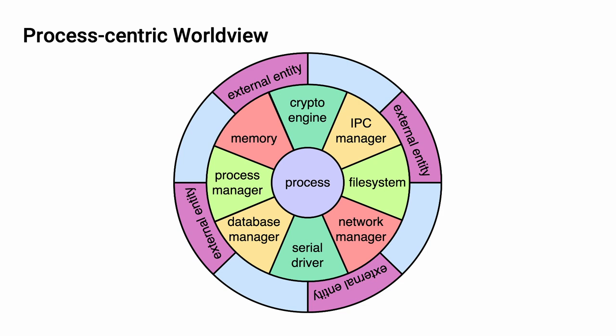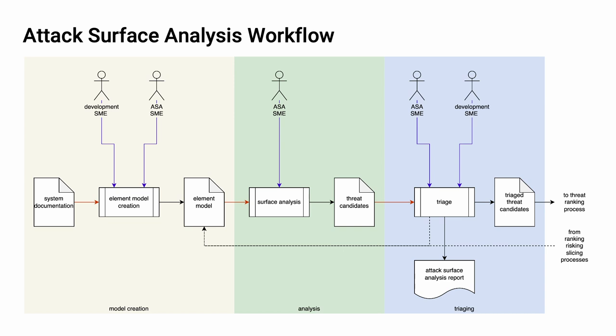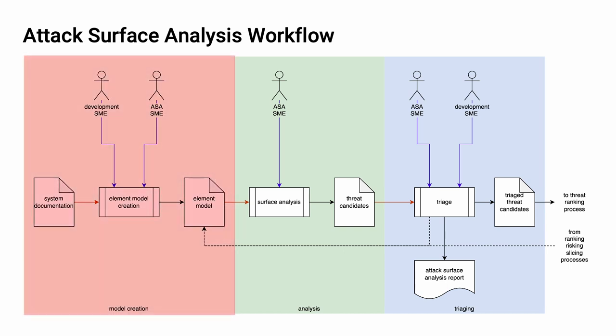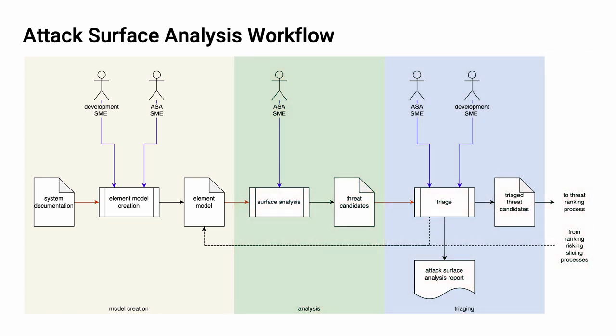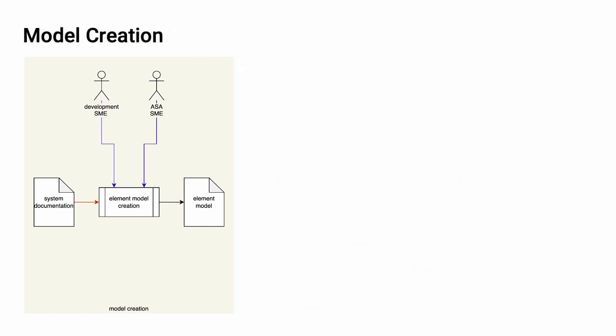Let's look at what that process looks like. Here's the overall attack surface analysis workflow as used within the AVCDL. We have three individual activities: model creation, analysis, and threat candidate triaging. In the model creation activity, the development SME and the attack surface analysis SME take the system documentation and create the element model, which may also be known as the list of ports and protocols in some domains. This model is very skeletal — it only shows what is known and serves as documentation of the ports, protocols, and important processes within the system.